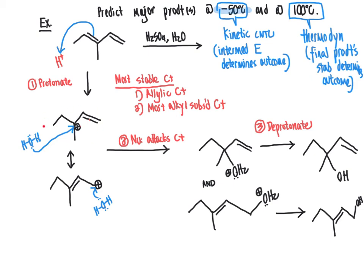The more stable one is the top one here, because that's a tertiary allylic carbon versus down here is a primary allylic carbon. So right here is the more stable one. So that's going to be what leads to the kinetic product.